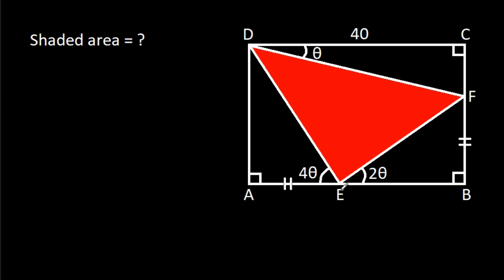We have been given that AE is equal to BF, CD is 40, angle CDF is theta, angle BEF is 2 theta, and angle AED is 4 theta. We have to find the shaded area.